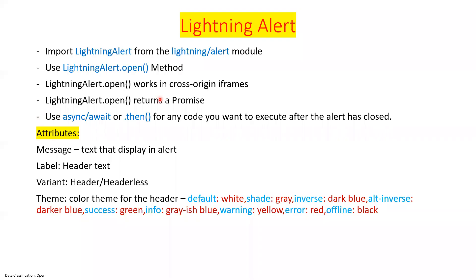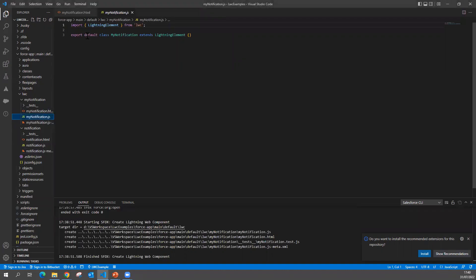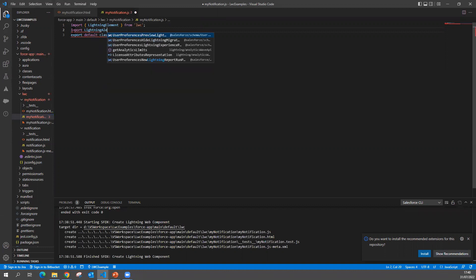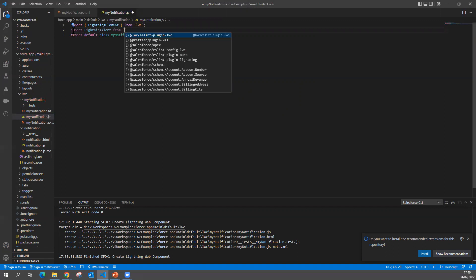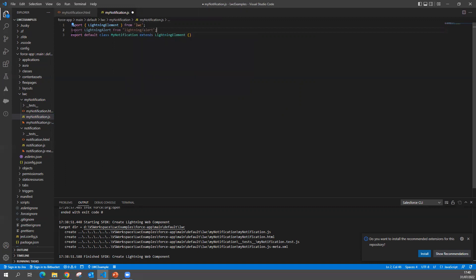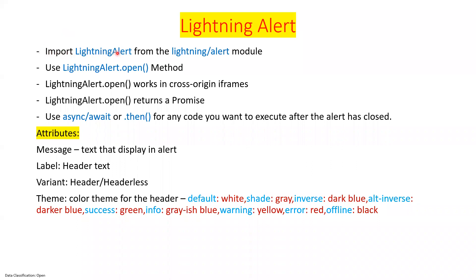Now I'll go to my JavaScript. There are two things to remember when you want to use alert in LWC. The first thing is you have to import LightningAlert from the lightning/alert module. Let's do that — put an import statement: import LightningAlert from 'lightning/alert'.